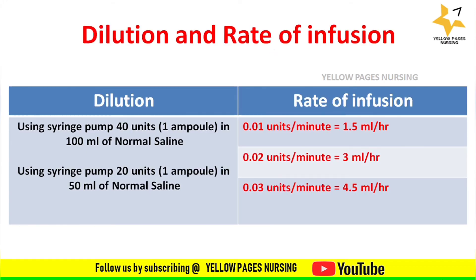The rate of infusion for both forms of dilution — 40 units in 100 ml and 20 units in 50 ml normal saline — is as follows: 0.01 units per minute gives 1.5 ml per hour; 0.02 units per minute gives 3 ml per hour; and 0.03 units per minute gives 4.5 ml per hour. The dilution varies whereas the rate of infusion remains the same.